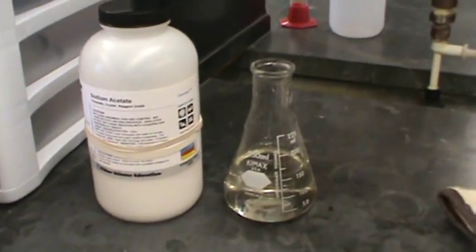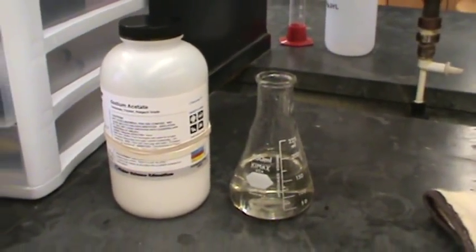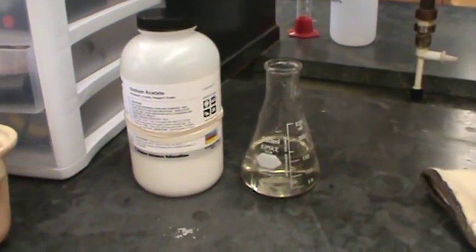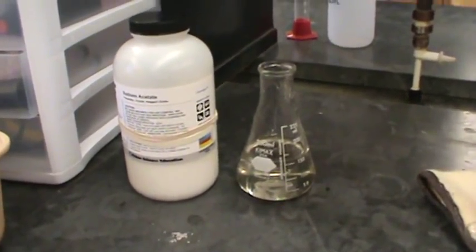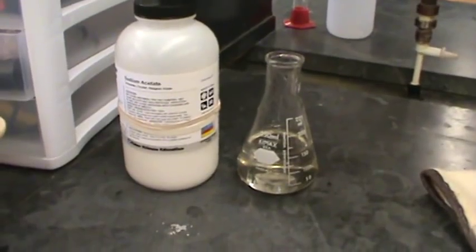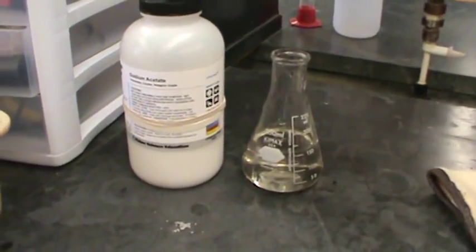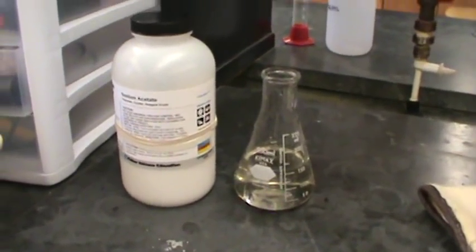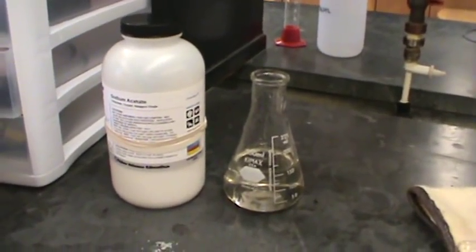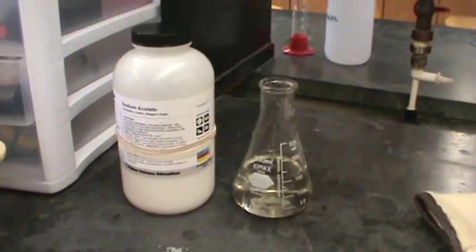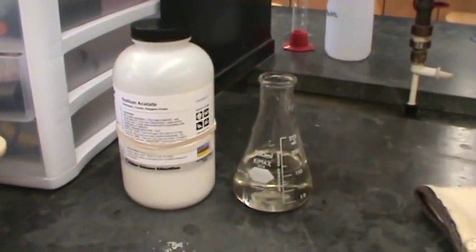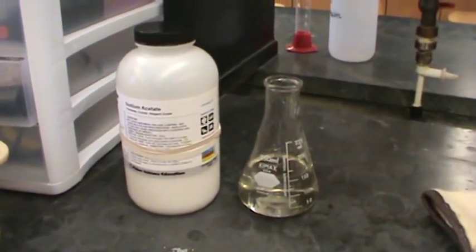Essentially, if you're going to try to make a supersaturated solution of sodium acetate, what you want to do is get some water, put it on a hot plate, and heat it up. And then slowly add, or maybe not so slowly, add some sodium acetate. It takes quite a bit to get a supersaturated solution. So just go ahead and dissolve a lot of sodium acetate into the water.